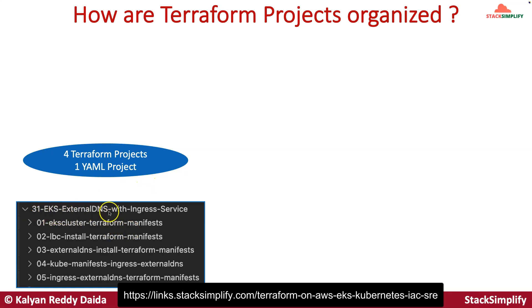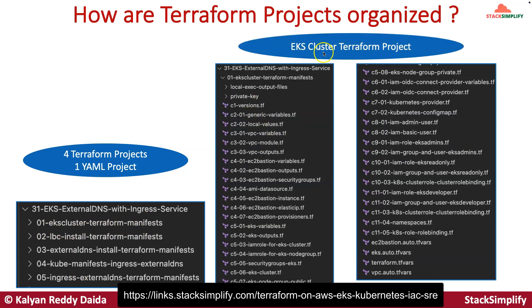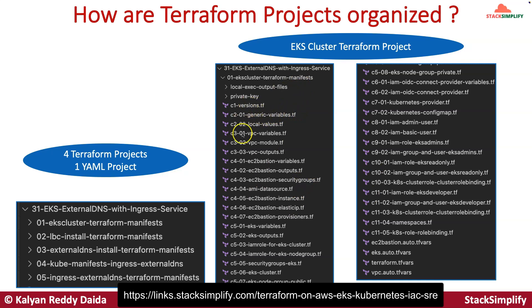For demo 31 — EKS External DNS with ingress service — you can see there are five projects total. The first is '01 EKS Cluster Terraform Manifest', which contains the complete EKS cluster Terraform project including the EC2 bastion host, IAM-related configurations, and EKS cluster-related configurations. Everything related to the EKS cluster is inside this first project, built step-by-step incrementally.